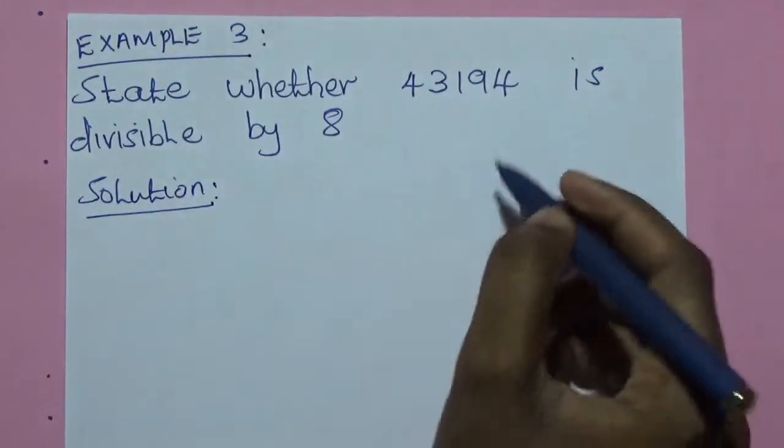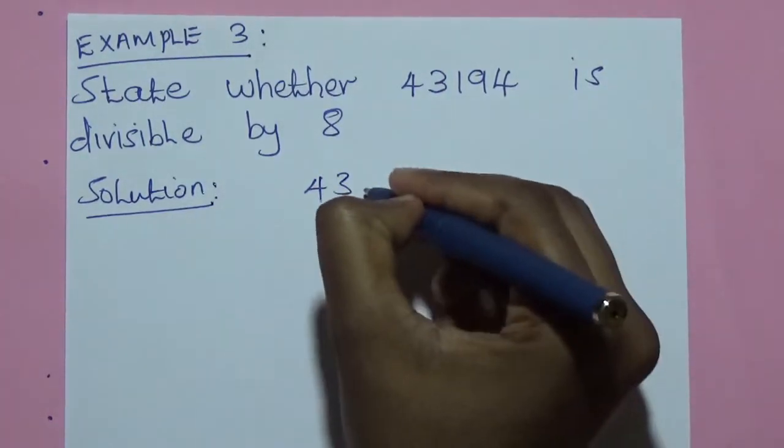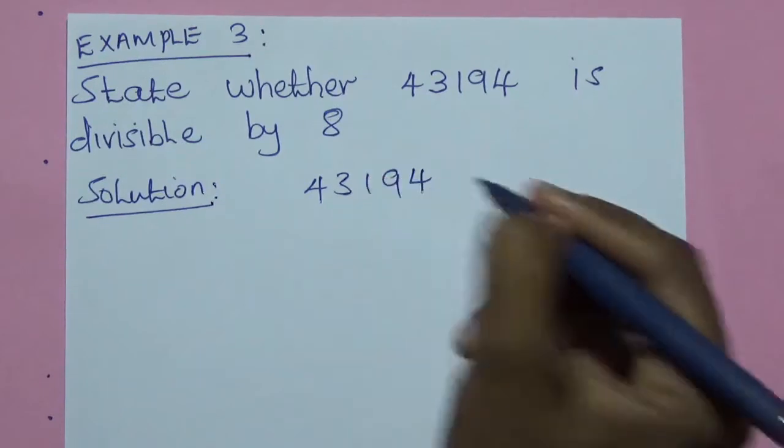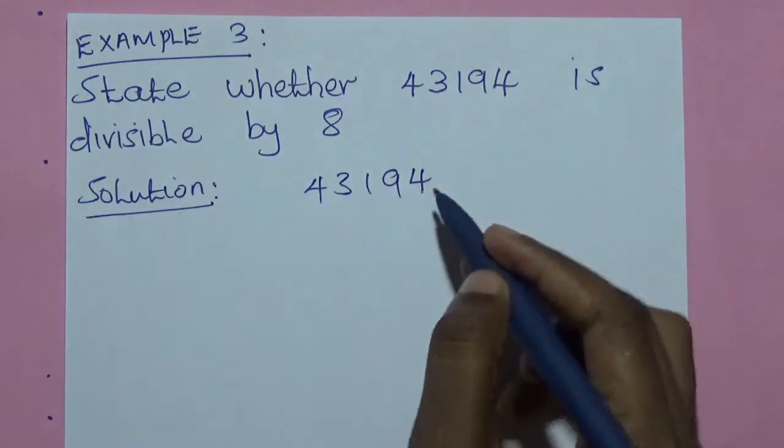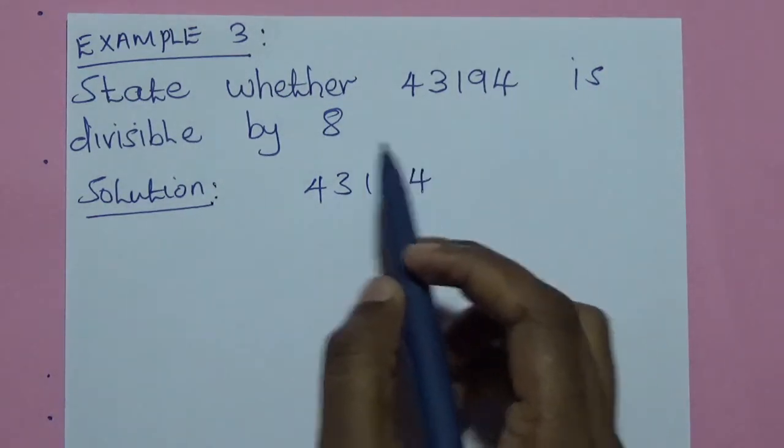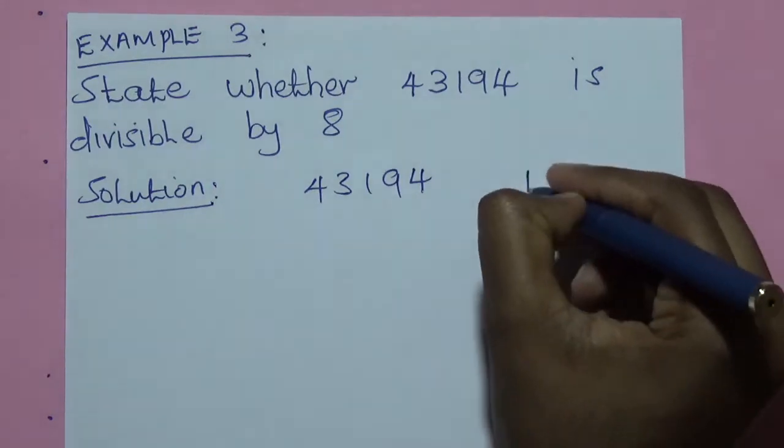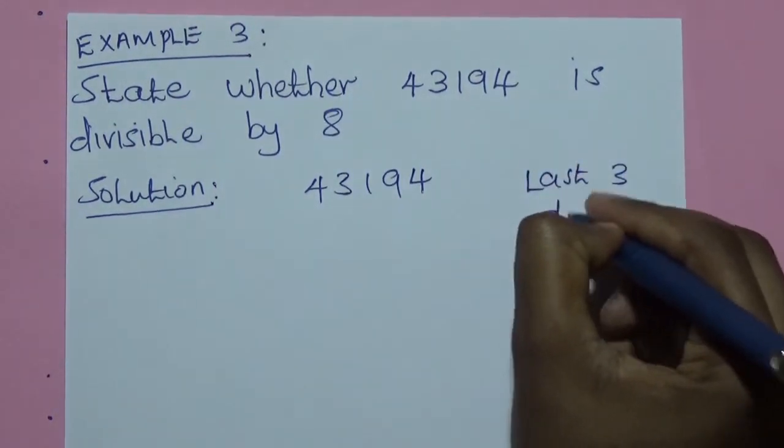Look at the solution. The number we are given is 43,194. Now, this number has five digits also. But remember, to test the divisibility for 8, we are only interested in the last three digits.